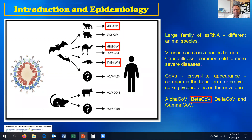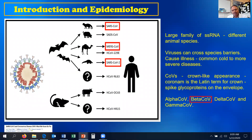These viruses can cross species barriers and cause illness. Some of the common symptoms are cold, fever, and then depending on the individual's immune system, it progresses to a more severe stage. COVID-19 got its name because of the crown-like appearance — Corona is the Latin term for crown — and also because of the spikes outside the virus. There are different types of coronavirus: alpha, beta, delta, and gamma coronavirus. This particular SARS-CoV-2 belongs to the beta coronavirus.